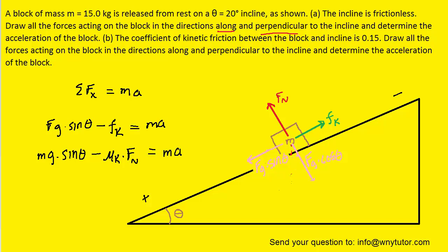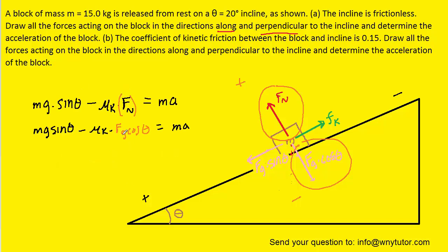Next, let's discuss the normal force. Looking at the free body diagram, the normal force points in the positive y direction and FG cos θ points in the negative y direction. Because the block is not accelerating in either of those directions, the normal force must equal FG cos θ in magnitude — the forces balance so the block doesn't accelerate in the y direction. So we replace Fn with FG cos θ, and then FG with mg.